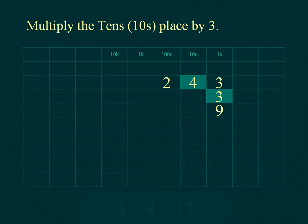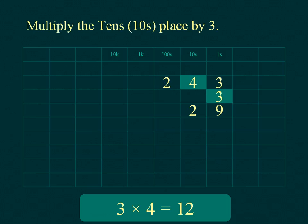Multiply the tens of the multiplicand. Place the units of the result below the line in the tens place and place the tens of the result under the hundreds place.